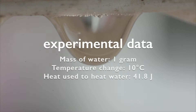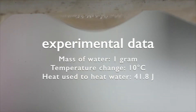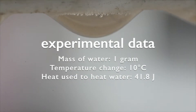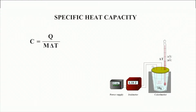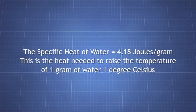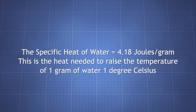For example, in an experiment, 1 gram of water changed temperature by 10 degrees Celsius. The scientists determined that the amount of energy used was 41.8 joules. We can use this data to calculate the specific heat capacity of water. First, rearrange the equation to find C, so that C equals Q over M times delta T. Plugging the values from the experiment into this equation, we get 41.8 divided by 10 times 1, which equals 4.18. This value of specific heat capacity is the amount of heat energy needed to raise the temperature of 1 gram of water by 1 degree.